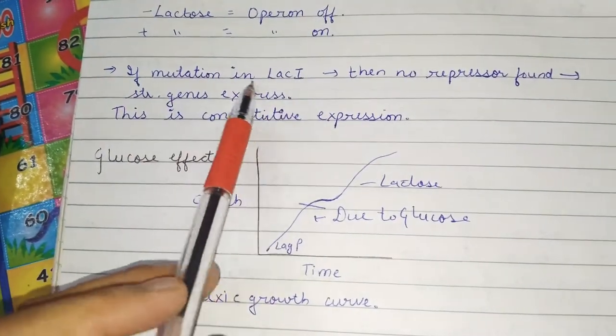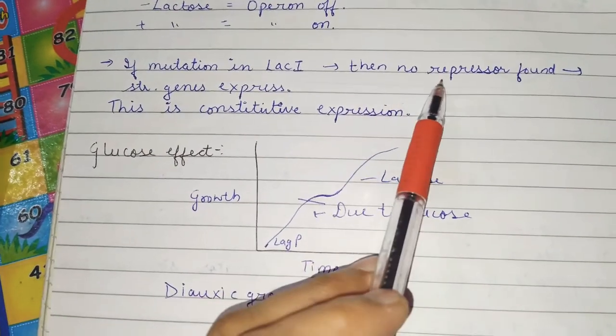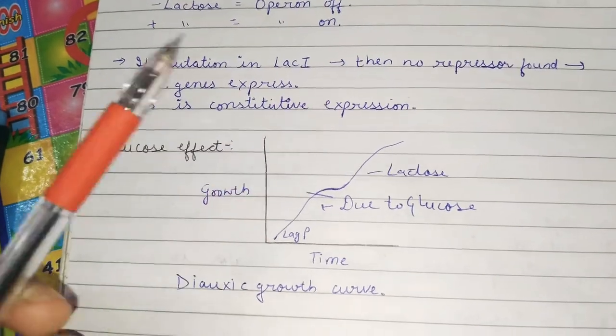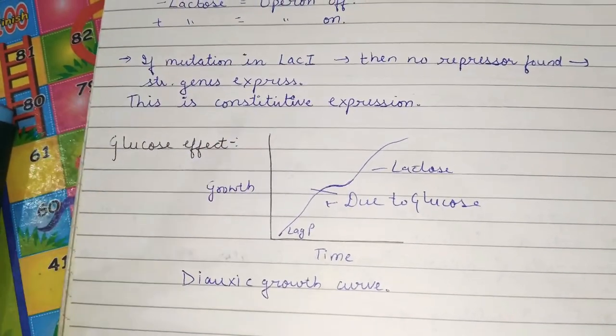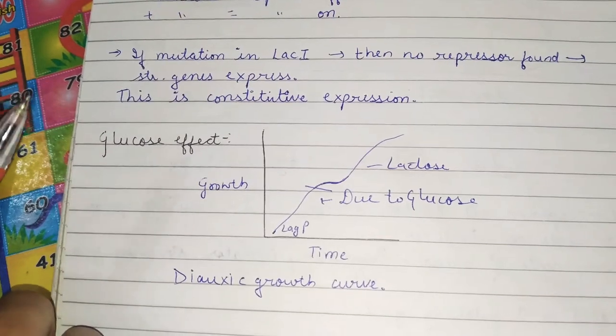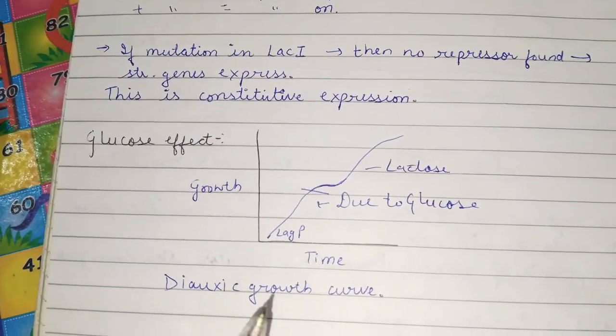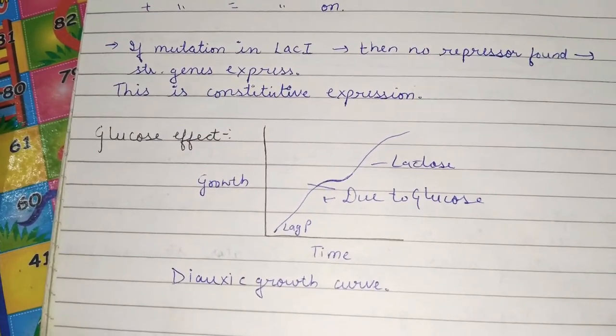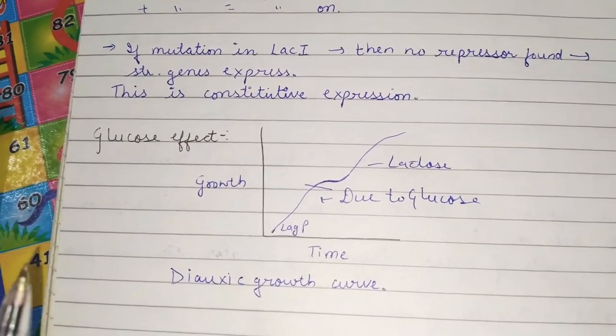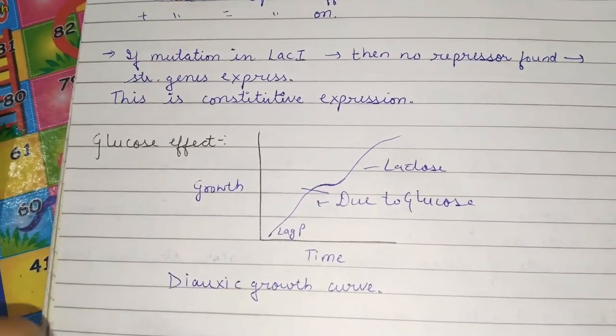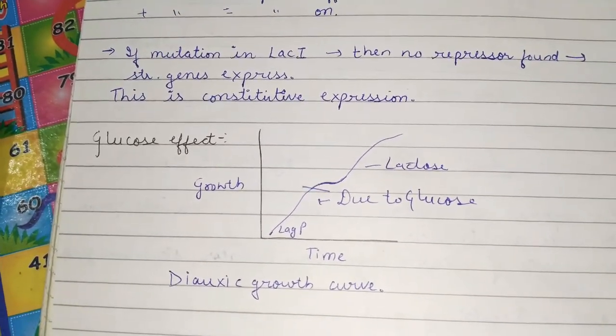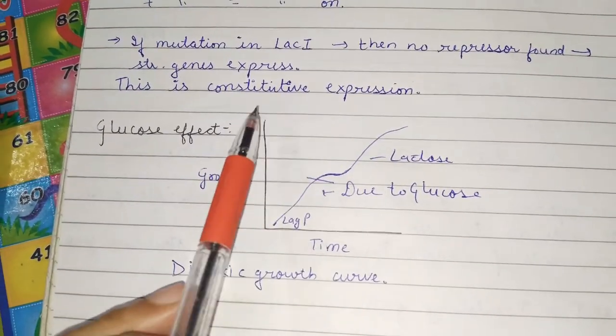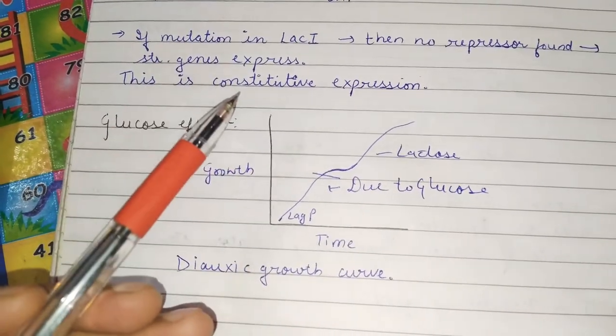If mutation in lac I, then no repressor is found. If no repressor is found, then the structural gene will express. Because no repressor will bind to the operator, then the operator is free and RNA polymerase can perform its function. So, it is a constitutive expression because then the process is continuously going on.